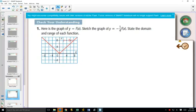So they've given us a graph, and they're saying that's the graph of f of x. And we want to sketch the graph of y equals negative one quarter f of x. So this is in function notation.